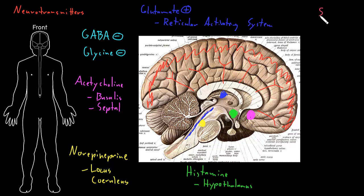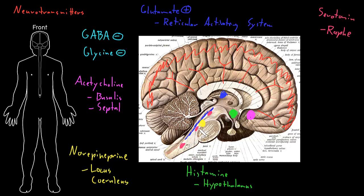Then there is serotonin. There are a number of nuclei at all levels of the brainstem — up in the midbrain, in the pons, and in the medulla — all called the raphe nuclei. The raphe nuclei release serotonin, and it's mostly the higher ones that send diffuse projections up to the cerebral cortex. These raphe nuclei also send serotonin to other parts of the nervous system.